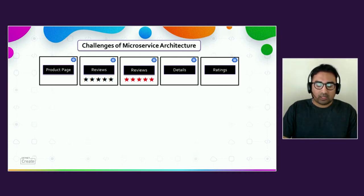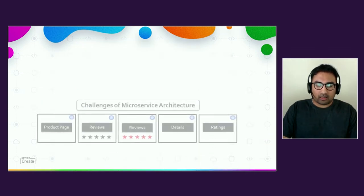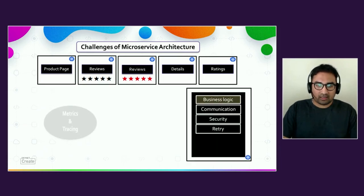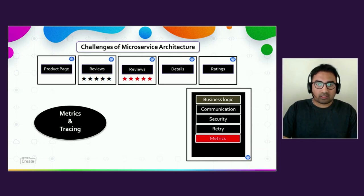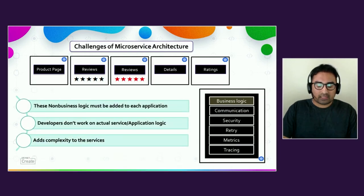What about retry logic? We need to include retry logic into each microservice to build a robust application. If a microservice is not reachable or connectivity is lost, we need to retry the connection — developers must include this logic in each service. What about metrics? We need to monitor how services are performing, what HTTP errors we're getting, how many requests are being sent and received, and how long requests take to identify bottlenecks. Developers need to include monitoring logic for Prometheus and collect tracing data using libraries like Zipkin — all non-business logic added to each application.